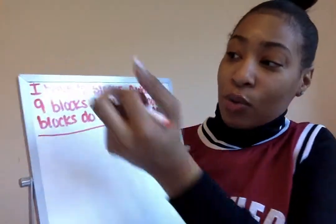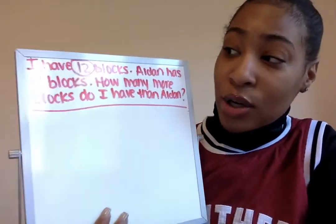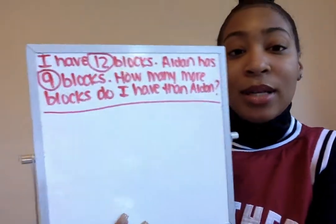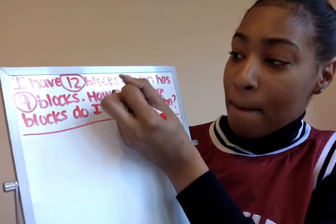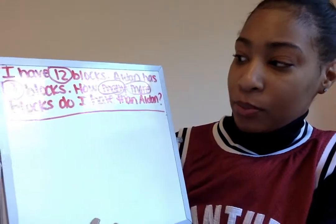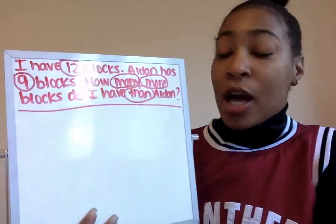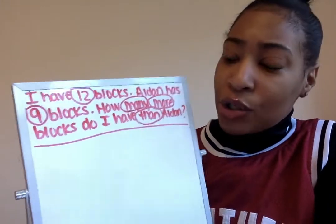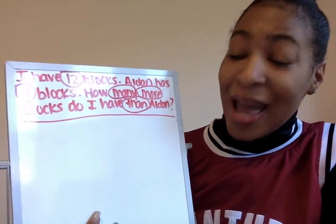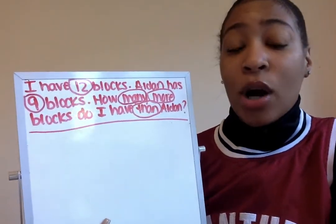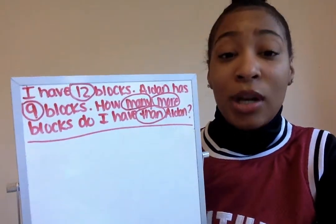I'm going to circle the number 12 because that's how many blocks Aiden has. And then I'm going to circle the words 'many more,' and I'm also going to circle 'than.' So this problem is a little different — do you all think that we're going to be adding or subtracting? If you said subtracting, you are correct. Follow along while I draw the picture today because our picture is going to be a little different.